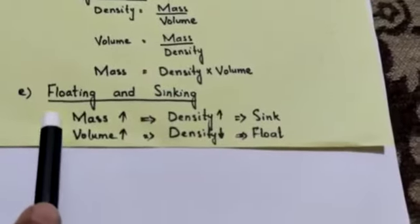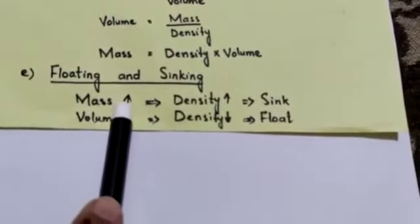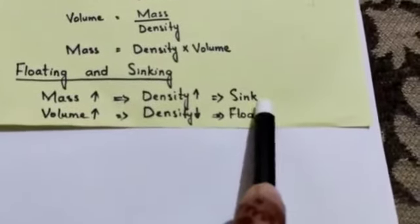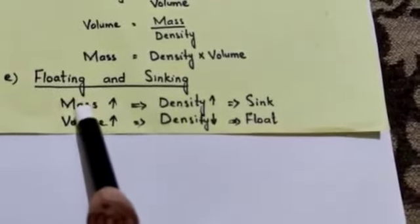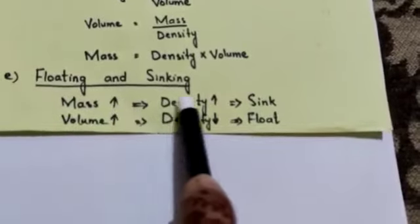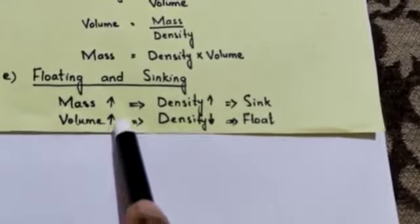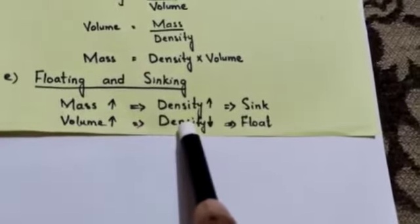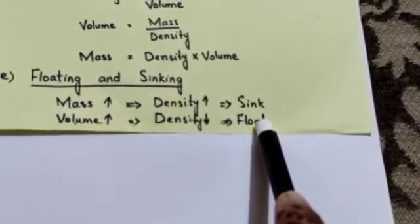Our last topic is about the floating and sinking of objects. Objects that have higher mass will have higher density, and if an object has higher density, it will sink. Objects that have higher volume will have lower density, because mass and volume are inversely proportional — if volume increases, density decreases. Objects with lower density will float.